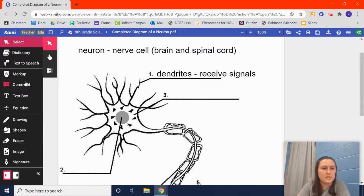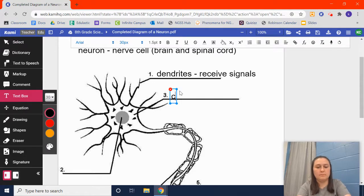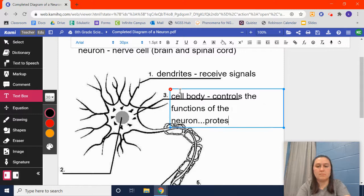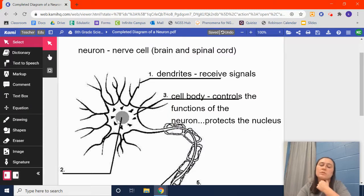This part, number three, we'll say that's the cell body. And pretty much that controls the functions of the neuron. I've sort of ruined the surprise for you, but the cell body is this white part with the little triangles in it. And that basically is the protection. It controls the function of the neuron because it protects this gray circle, which is like any sort of center of a cell, like plants and animal cells we talked about last year. That's called the nucleus.